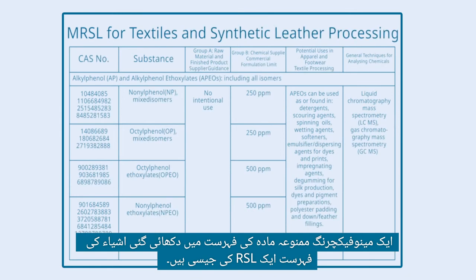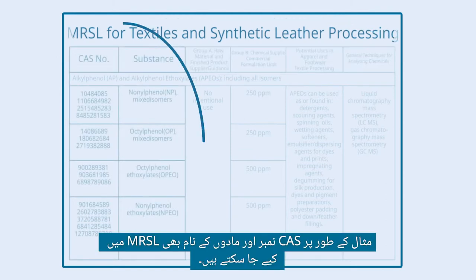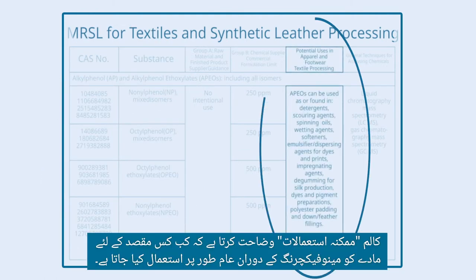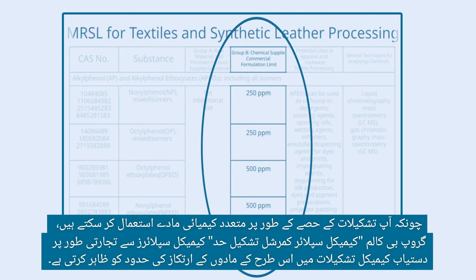The items shown in a Manufacturing Restricted Substance List are similar to those of an RSL. For example, the CAS numbers and names of the substances can also be found in the MRSL. The column Potential Uses explains when and for what purpose the substance is commonly used during manufacturing. The last column, General Technique, indicates the laboratory methods required for analyzing the concentrations of these substances. The Group B column, Chemical Supplier Commercial Formulation Limit, shows the concentration limits of such substances in commercially available chemical formulations from chemical suppliers.